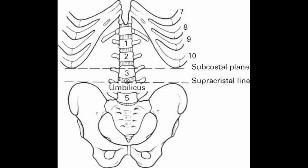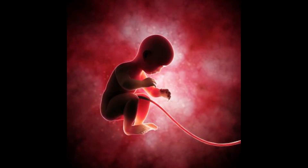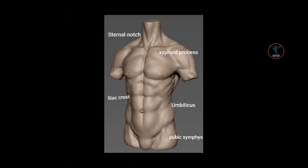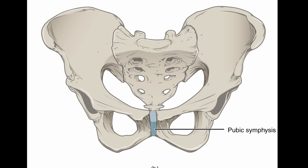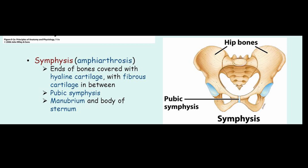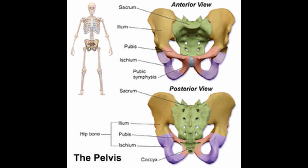The umbilicus is the attachment site of the umbilical cord, making it an easy landmark to remember. Our last body landmark is the pubic symphysis. It is a secondary cartilaginous joint made of hyaline cartilage and fibrocartilage, located between the right and left pubic bones near the midline of the body. More specifically, it is located above the external genitalia and in front of the bladder.